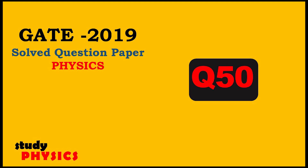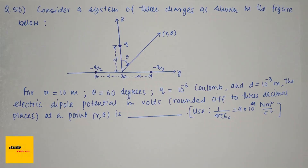Hi everyone, welcome to Study Physics. This is question number 50. Consider a system of three charges as shown in the figure below. For r equal to 10 meter, theta equal to 60 degrees, q equal to 10 to the power minus 6 coulomb, and d equal to 10 to the power minus 3 meter, the electric dipole moment involves...